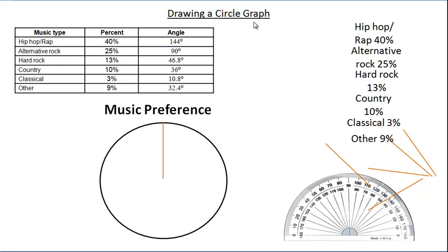In this tutorial we're going to take a look at how to draw a circle graph or a pie graph. You might be given some information like this - music preferences for a certain population that's been sampled.